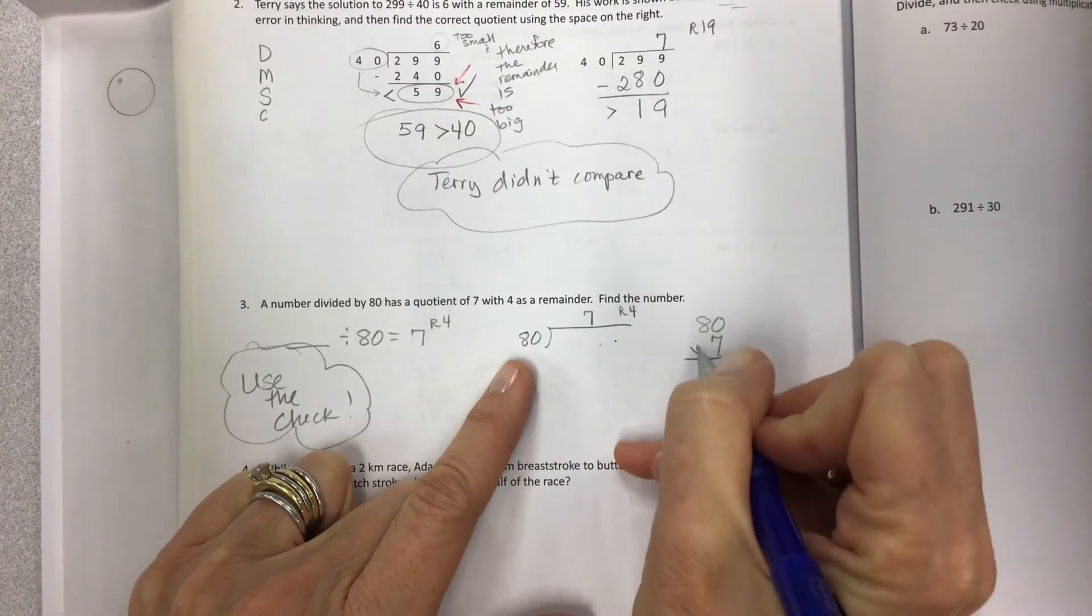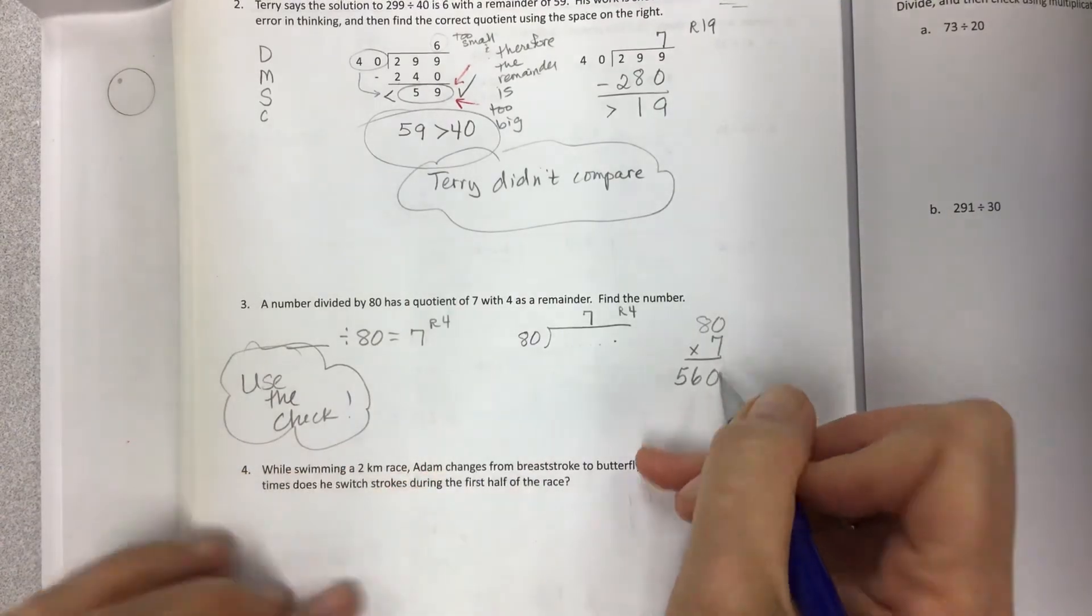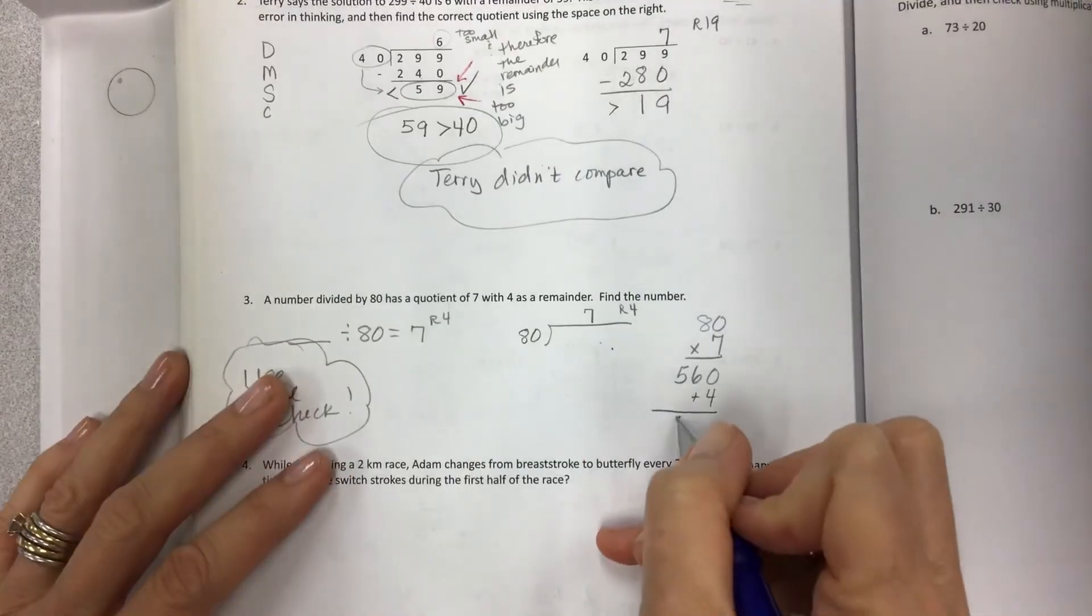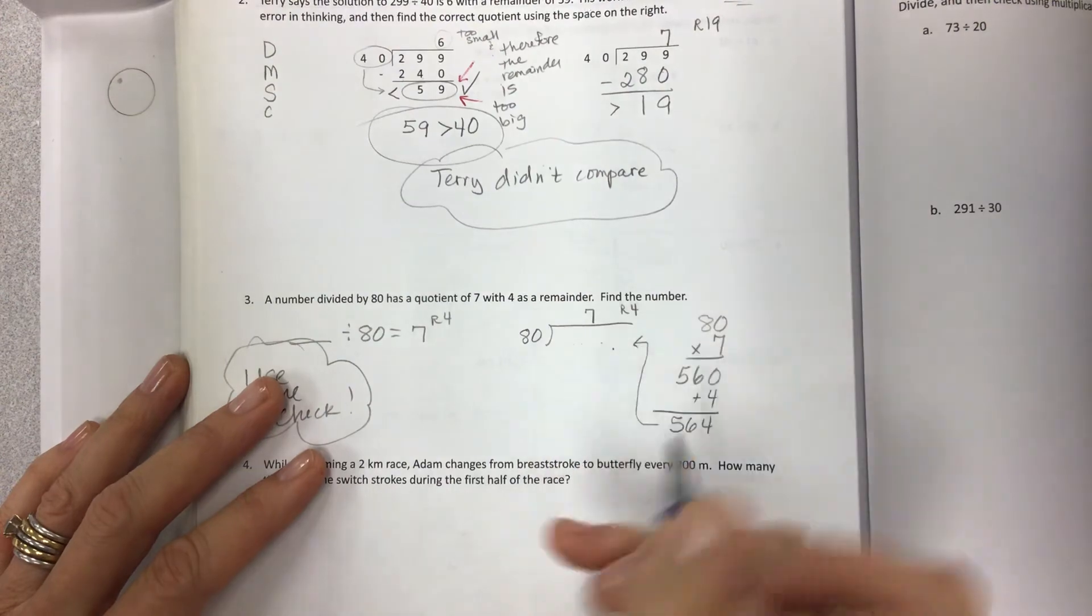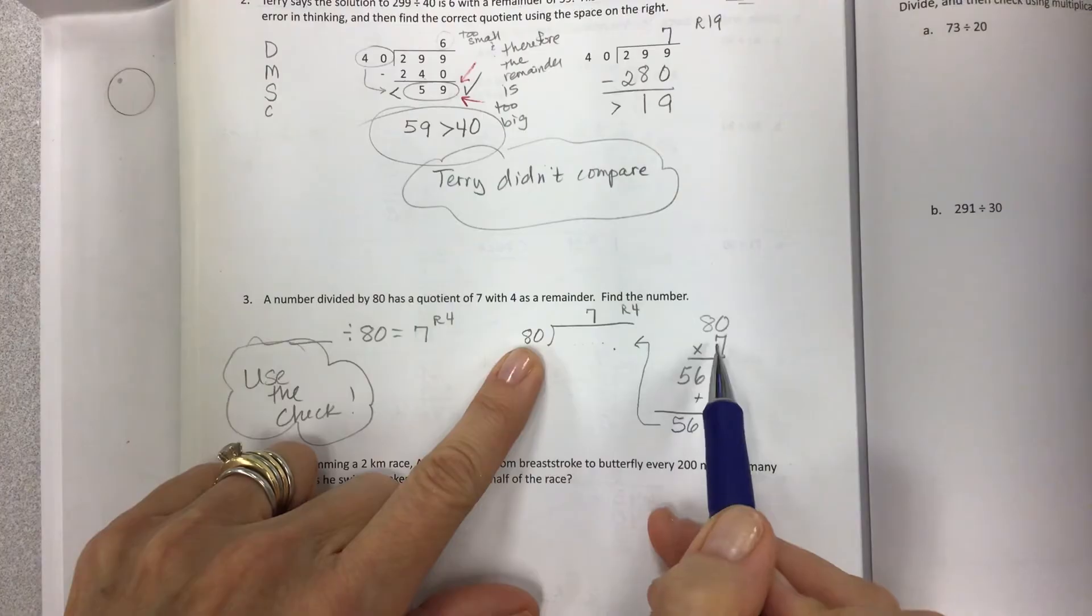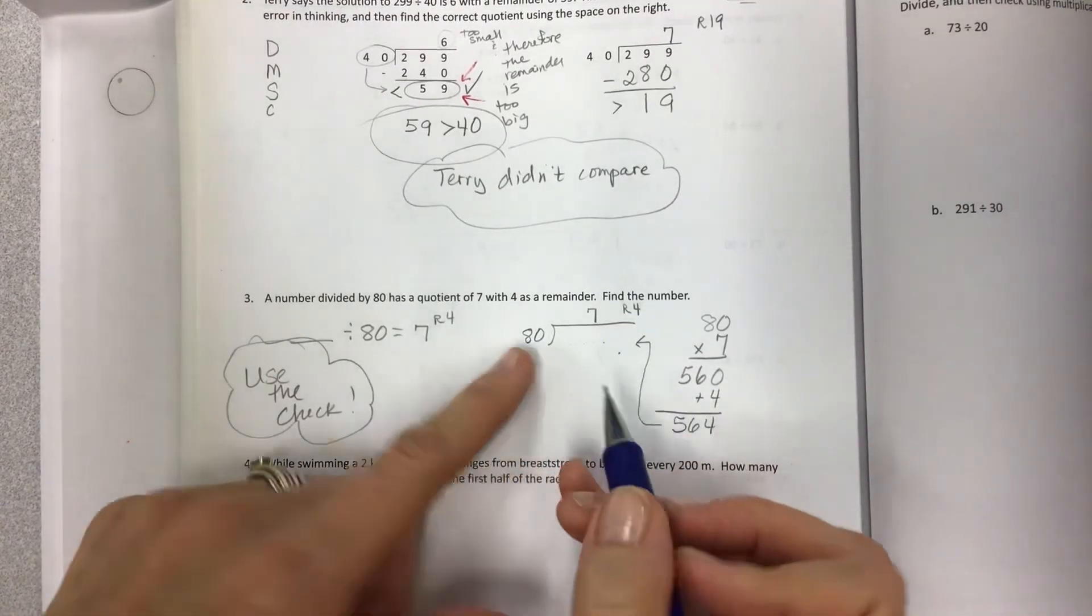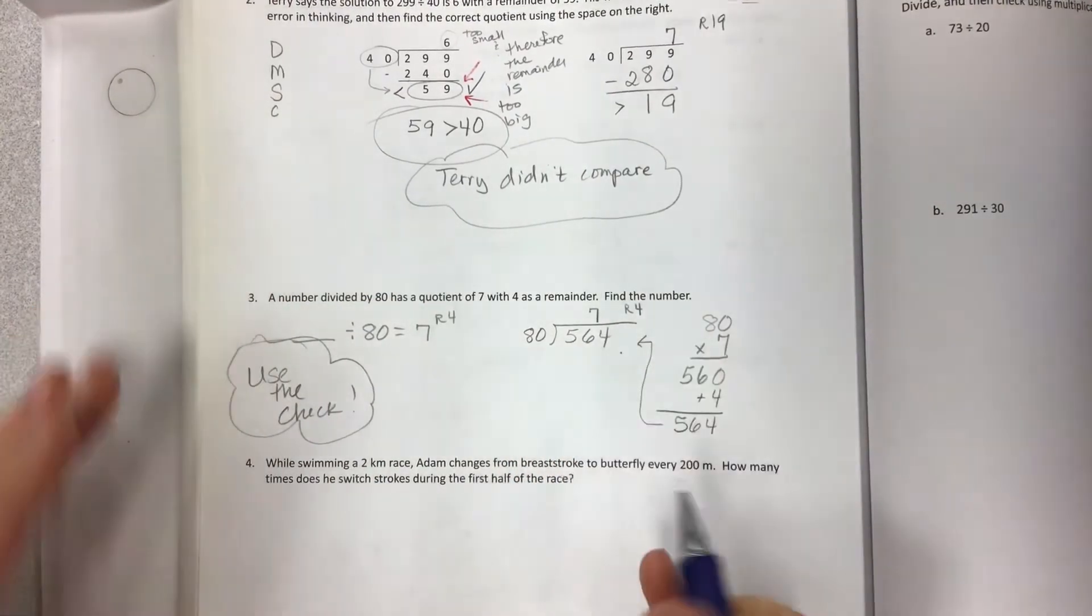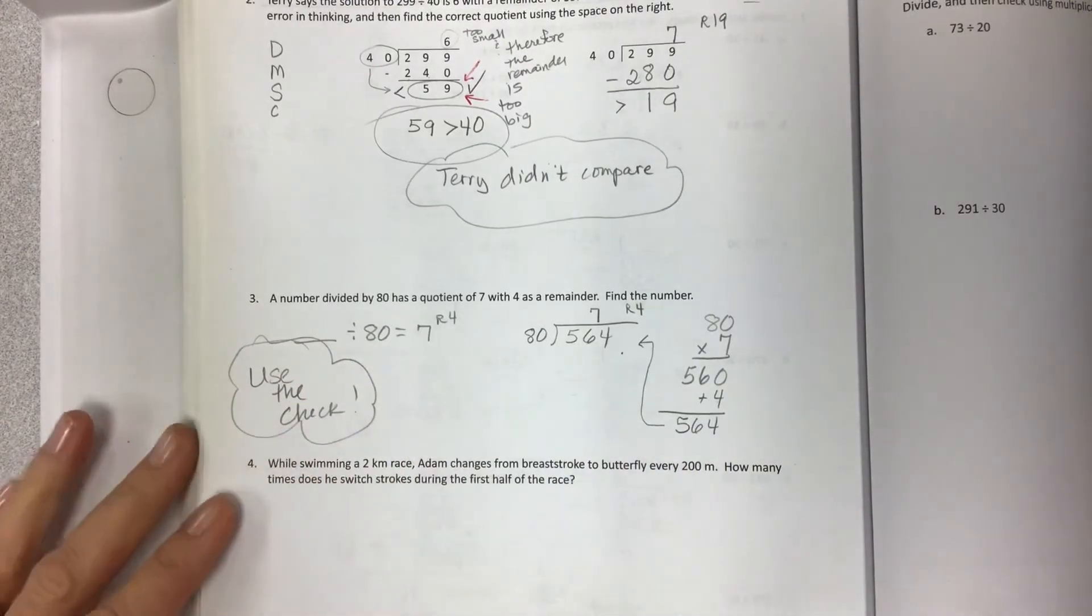And let's take all the information that we have here. 80 times 7. 7 times 0 is 0. 7 times 8 is 56. And then add that 4. 5, 6, 4. That's what should go in here. Remember, because we compare. We multiply the outside, add the remainder, and you should have something to compare it to. This time we don't have anything to compare it to, so we're hoping we're right, but we are right. So it should be 564. And your method is to use the check to find those.